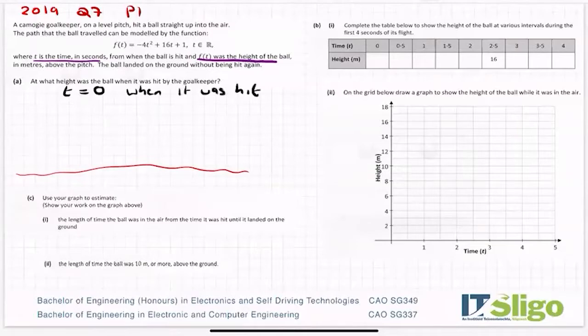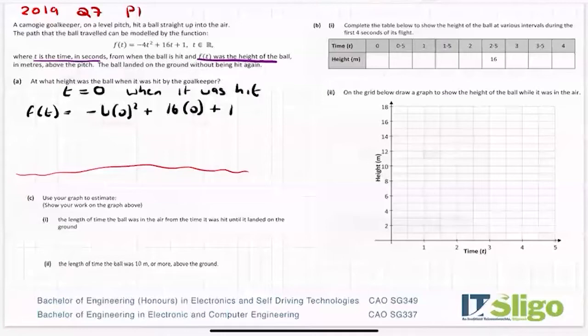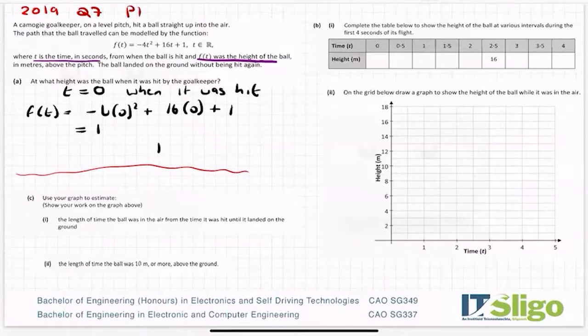Okay, so t is zero when it was hit. So therefore into your function, if you sub in time being zero, you get the height of the ball at time zero. So anything by zero is zero, and that's zero, so you're going to get one. So the height of the ball in metres - one metre was the height of that ball from the second it was hit.